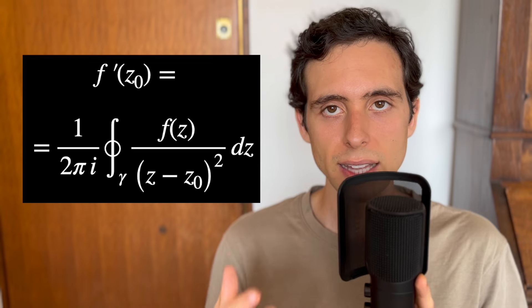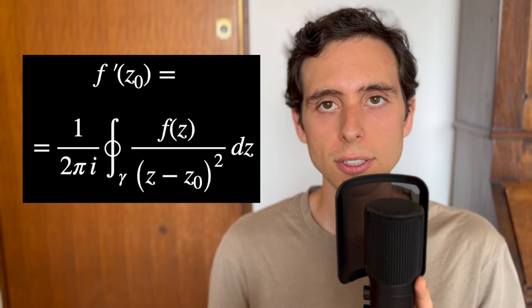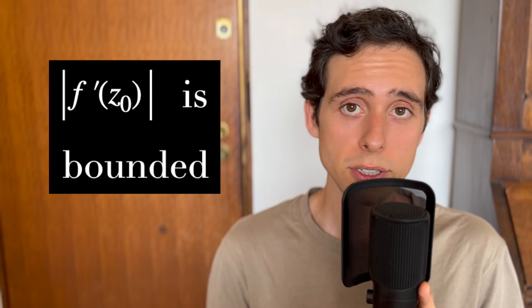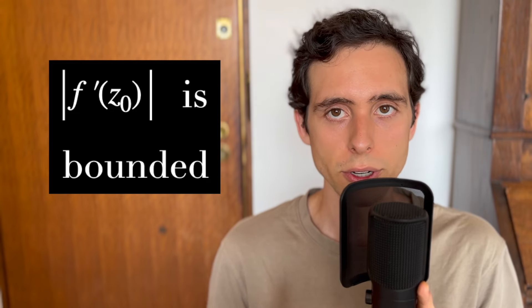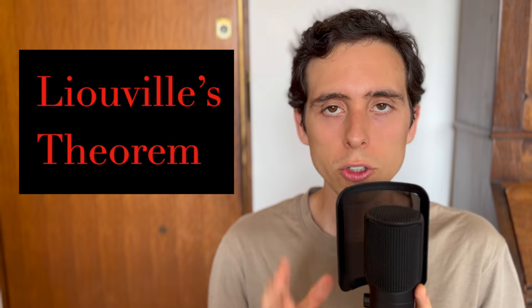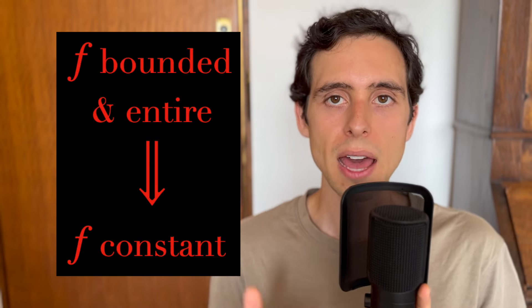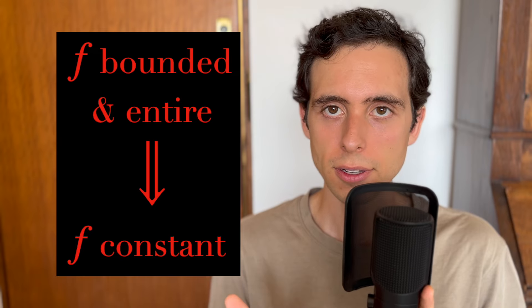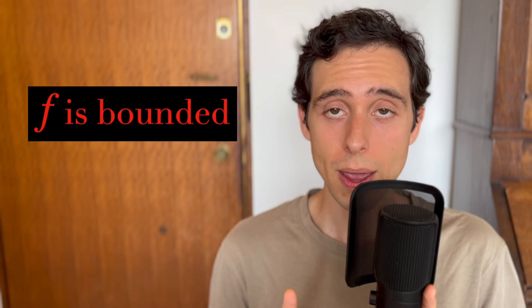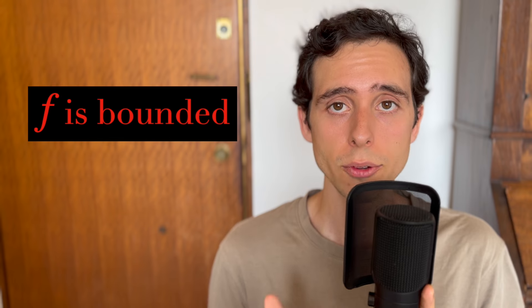The next step is to use this formula to deduce the fact that the absolute value of the derivative of f(z0) is bounded. A quick reminder, our ultimate goal here is to prove Liouville's theorem, which says that if f is bounded and entire, then it must be constant. So remember, f is assumed to be bounded here.